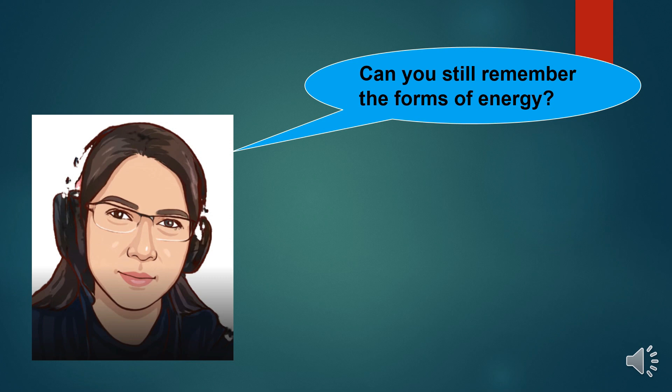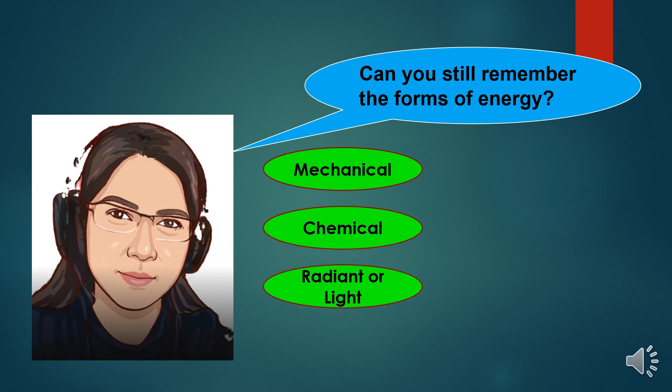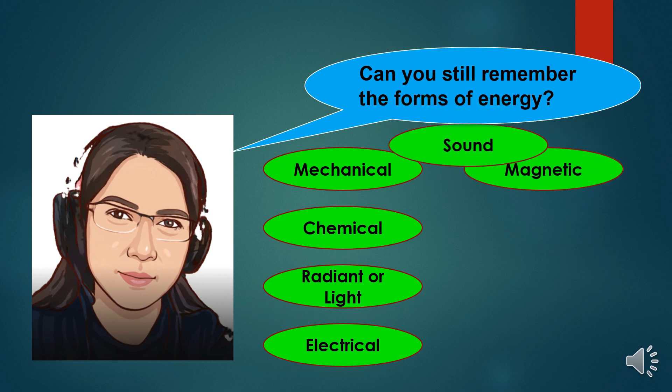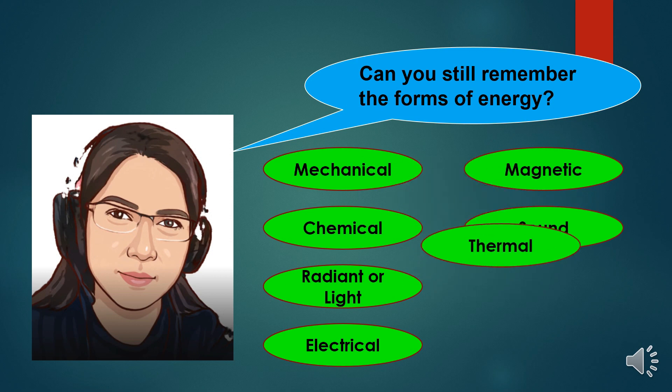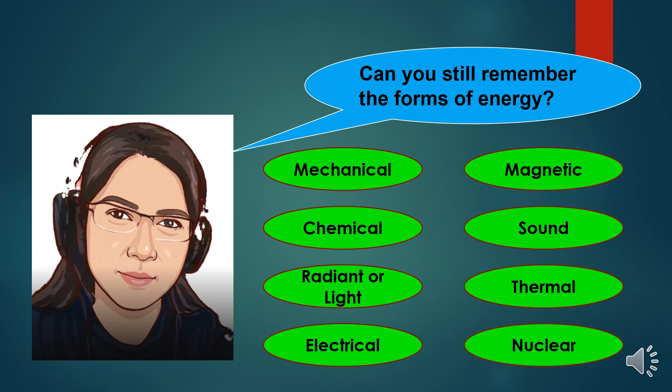Can you still remember the forms of energy? Excellent! These are mechanical energy, chemical energy, radiant or light energy, electrical energy, magnetic energy, sound energy, thermal energy, and nuclear energy.